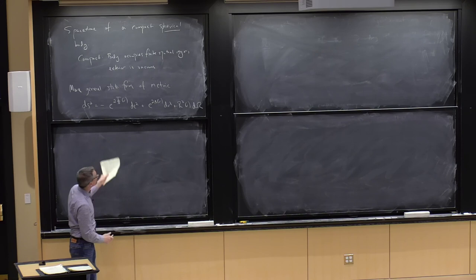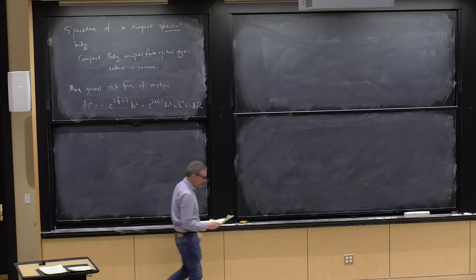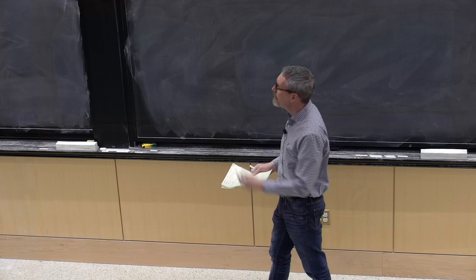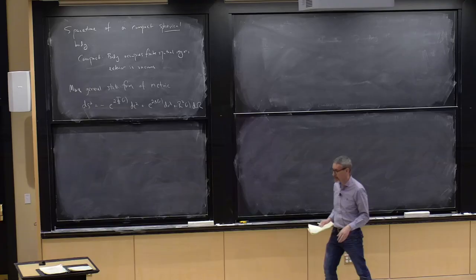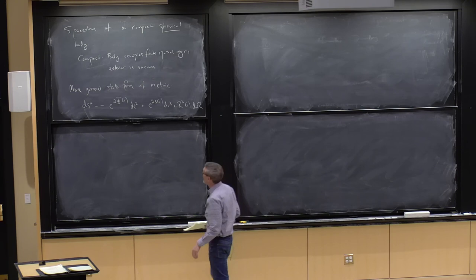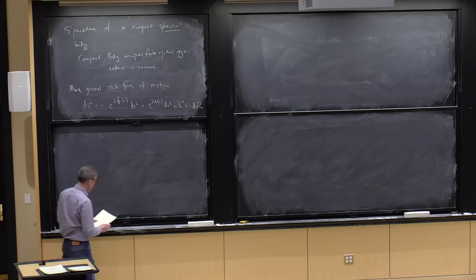You might wonder why there's no cross term. In particular, why can't I have a cross term between my dt and my dr? Basically, what you find is that if there is a cross term between the t and the r pieces, you can get rid of it by a coordinate transformation. This way of doing things so that it is diagonal amounts to choosing a good time coordinate. We can simplify the angular sector by choosing a good radial coordinate.